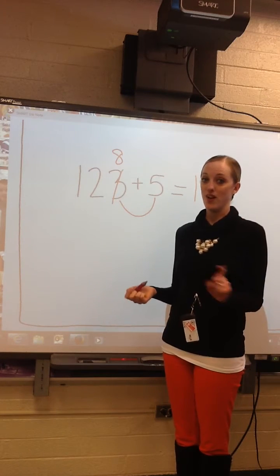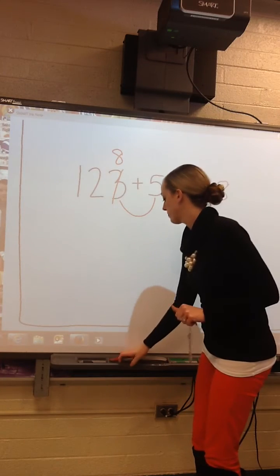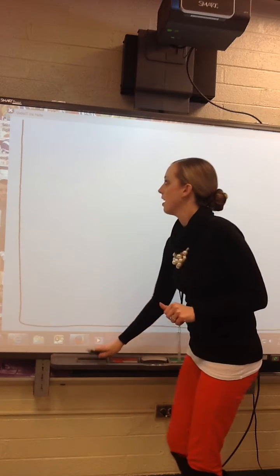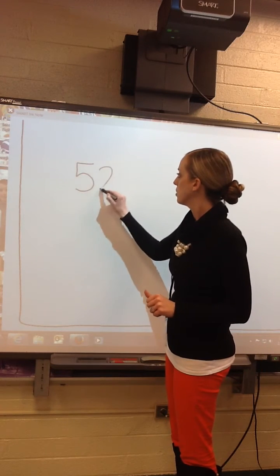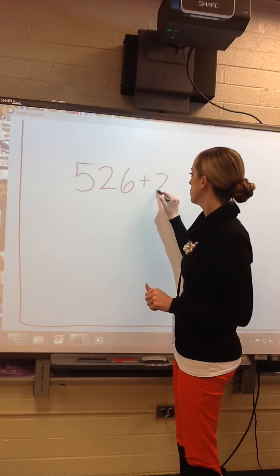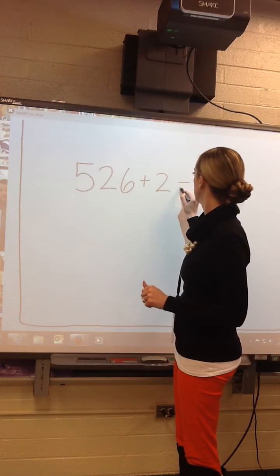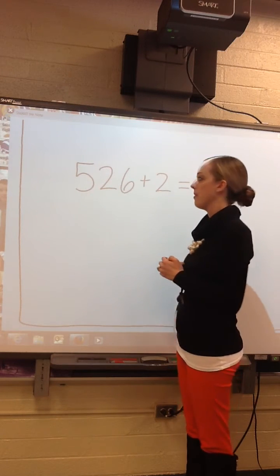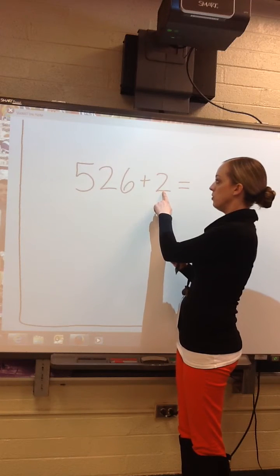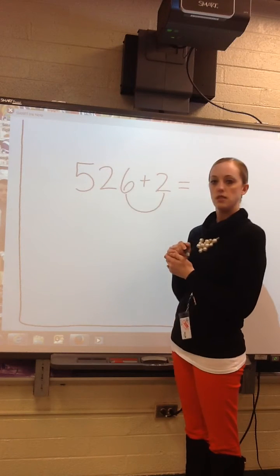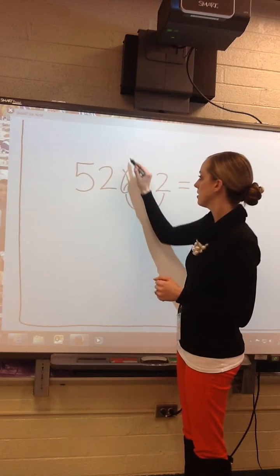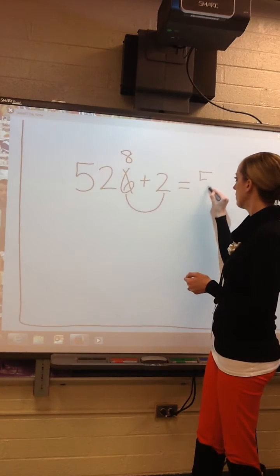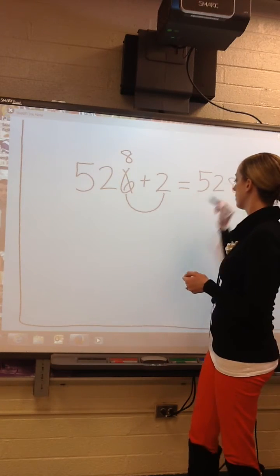I'm going to do one more, okay? So again, if I had the problem 526 plus 2, what am I adding? Hundreds, tens, or ones? I'm adding the ones. 2 ones plus 6 ones is 8 ones. So I'm going to cross this out and do the 8, and my sum is 528. Okay?